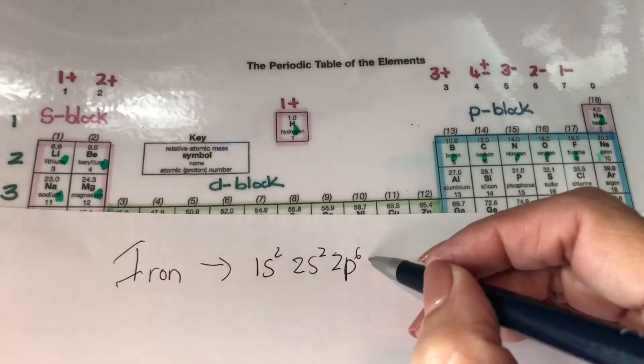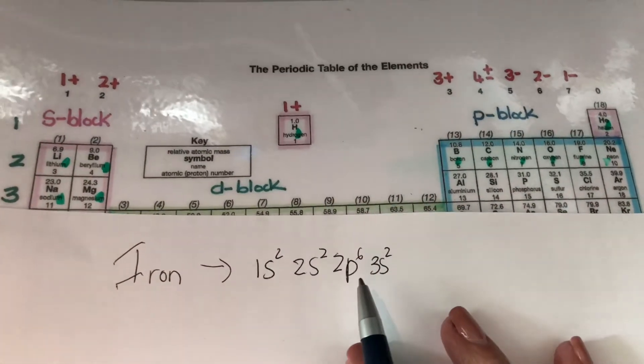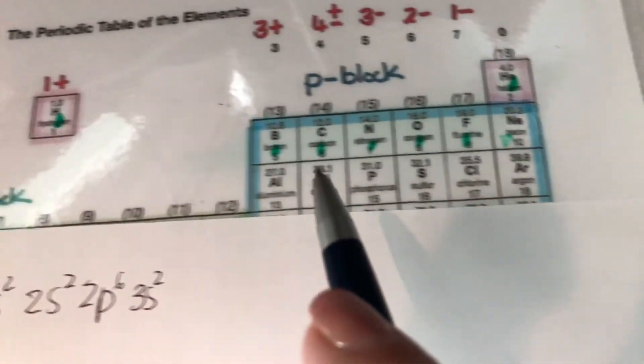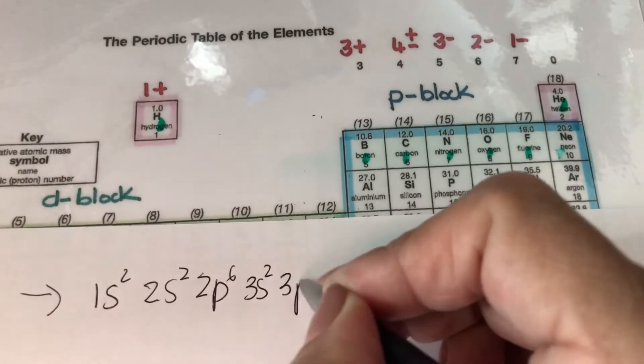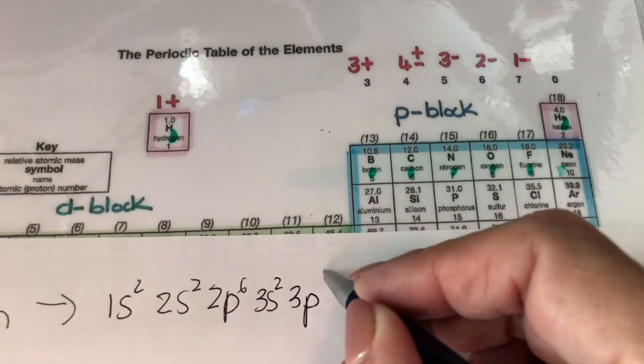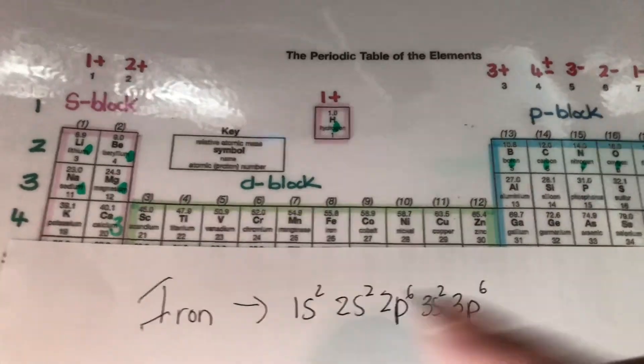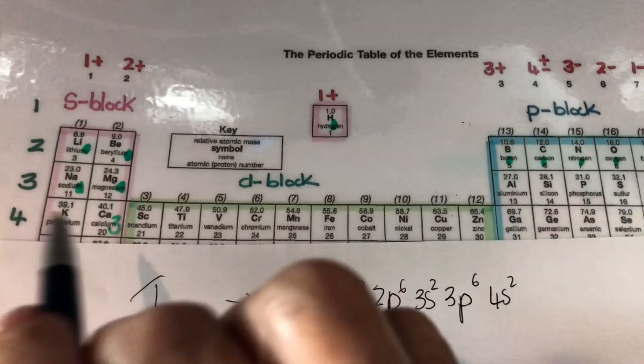Then it would be 3S2. 1, 2. From 3S I will go to 3P because I've got to follow the line through. So my 3P, I can see that I will have to go through all of them, which will be 6. We know that the 3P is 6 now. That brings me to 4S. 4S is 2. 1, 2.